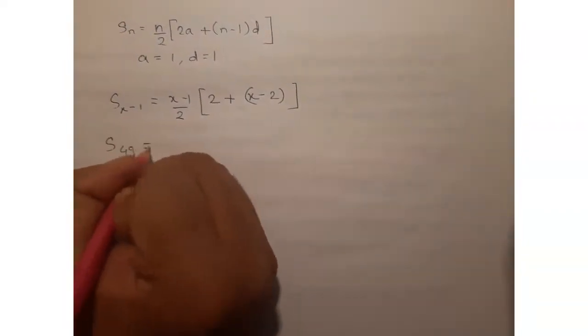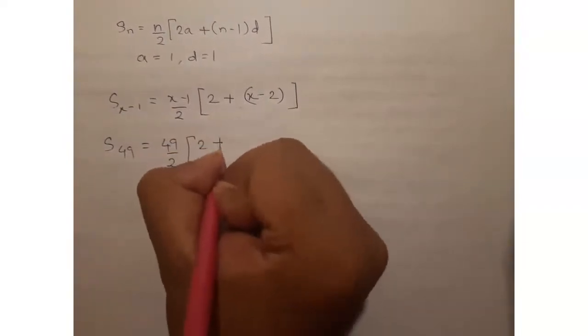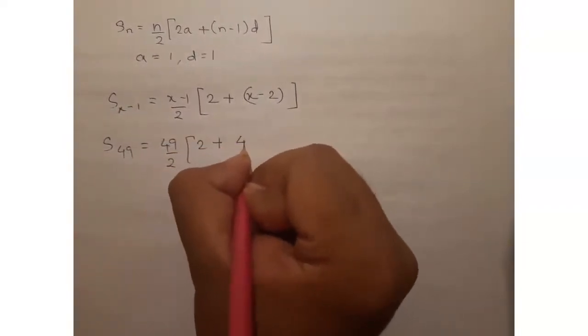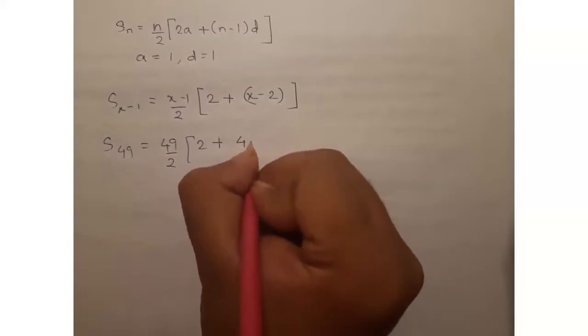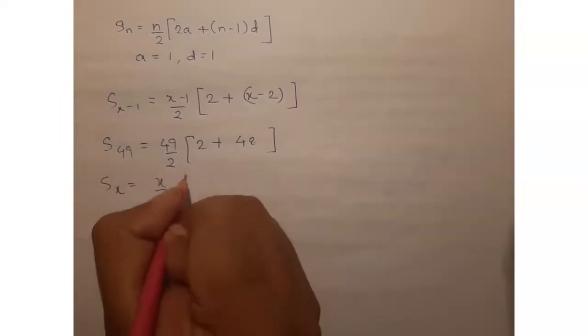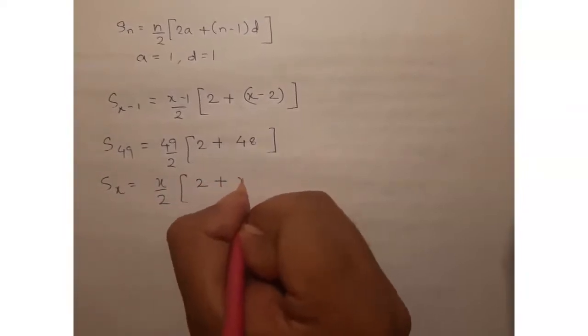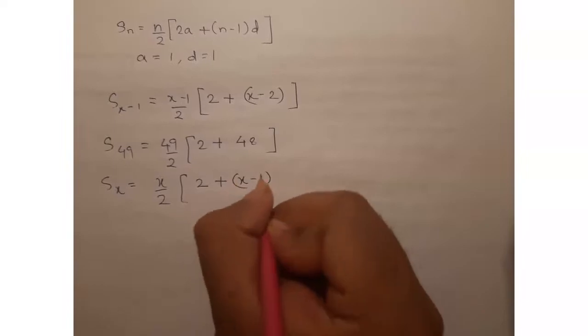And we will have S49 as 49 by 2, 2A plus 49 minus 1, 48 into D, D is again 1. And we will have Sx equals x by 2, 2A—A is again 1—plus n minus 1, that is x minus 1, into D which is 1.